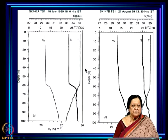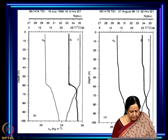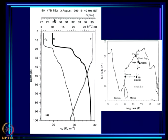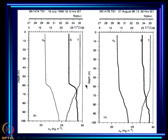Over the central Bay of Bengal, the salinity is somewhat less than typical but not as fresh — salinity is around 33 psu, whereas in the earlier slide it had reached 29 psu. Here the salinity mixed layer and the temperature mixed layer are the same and are much deeper than the barrier layer seen earlier. This profile also changes with time: from July 18 to August 27, the mixed layer became much deeper — from around 60 meters to about 70-80 meters.